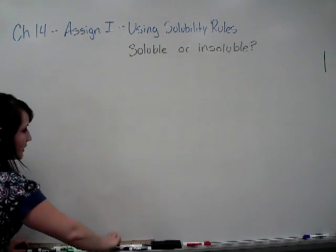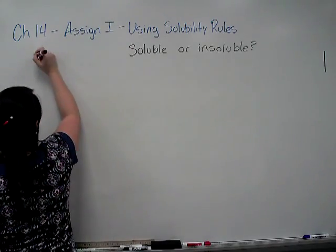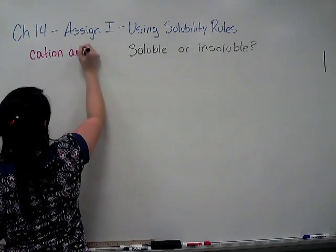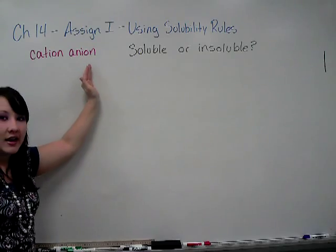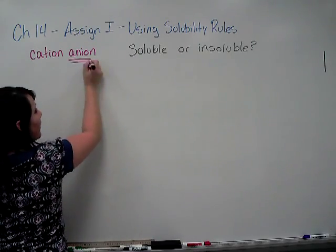When you're analyzing these solubility rules, you want to base it on the anion of a compound. Remember that ionic compounds are made up of a cation and an anion. The anion always comes second and you want to base your rules on the anion.